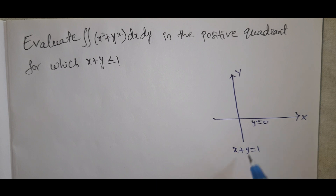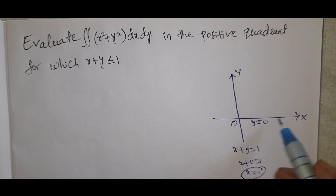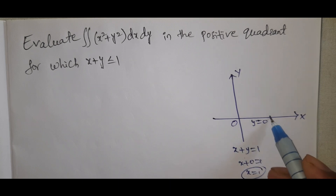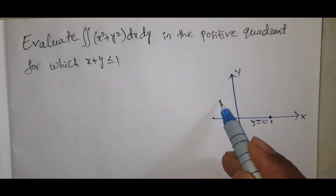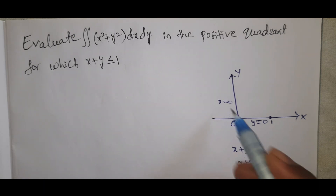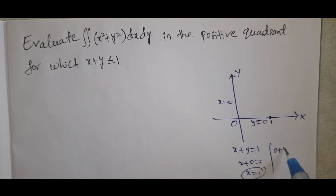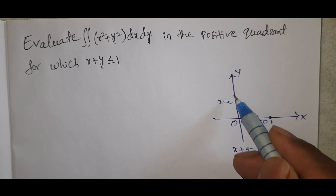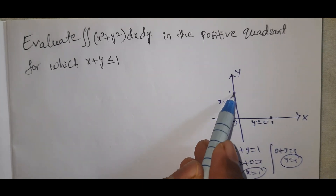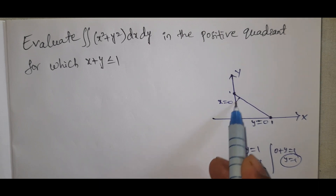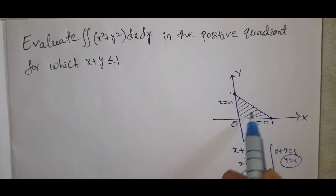When y = 0, we get x = 1, so x goes from 0 to 1. When x = 0, we get y = 1, so the point is (0, 1). Join these points to find the region. This is the region where x + y ≤ 1.